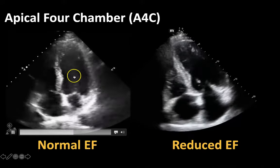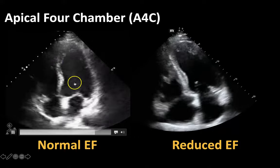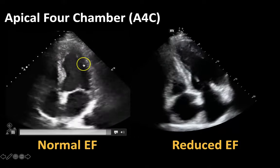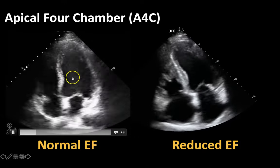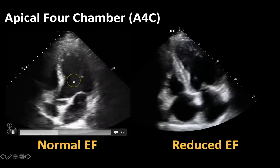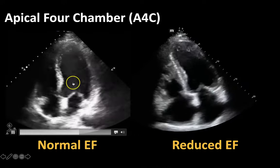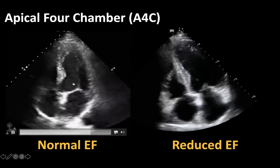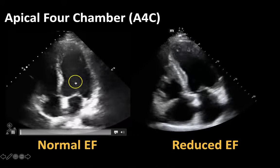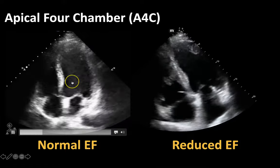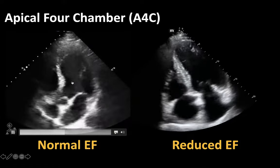Again when we're looking for ejection fraction, I want you to just focus on this left ventricle and envision this imaginary line right in the middle of the ventricle, and try to assess how well the walls are coming towards that middle. You can see here that the walls are coming reasonably close to the middle of the ventricle, and that this is a heart with a normal ejection fraction.